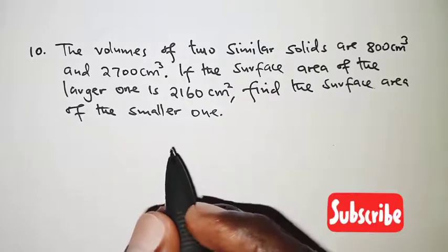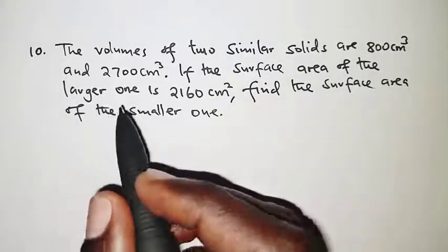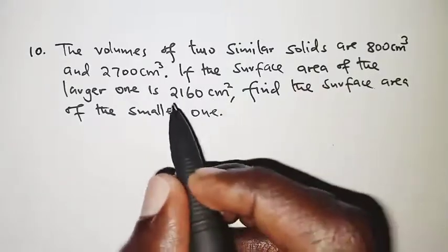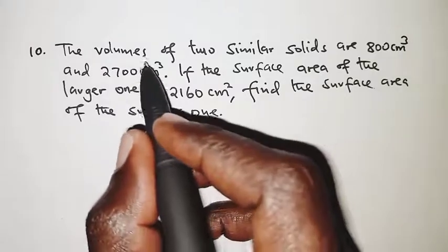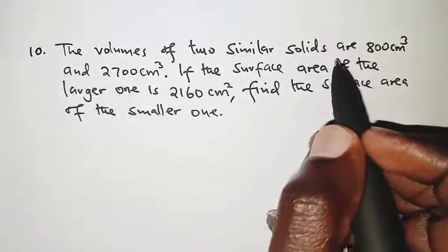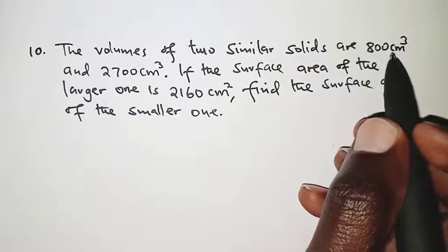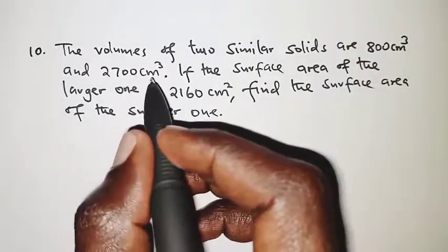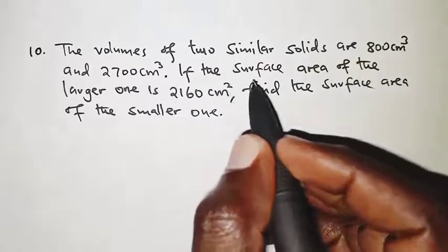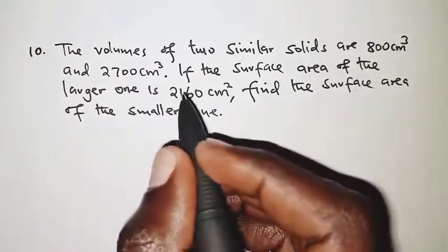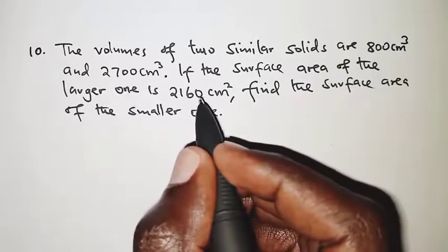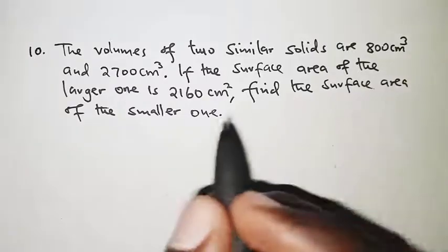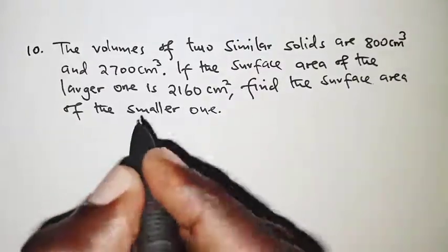Welcome, this is question 10 and today's question is on similarity. The question reads: the volumes of two similar solids are 800 cubic centimeters and 2700 cubic centimeters. If the surface area of the larger one is 2160 square centimeters, find the surface area of the smaller one.